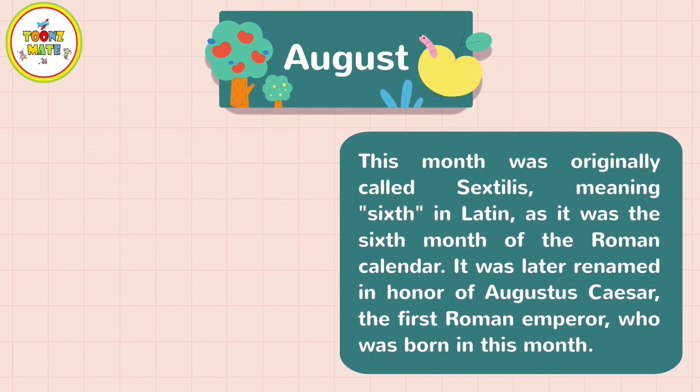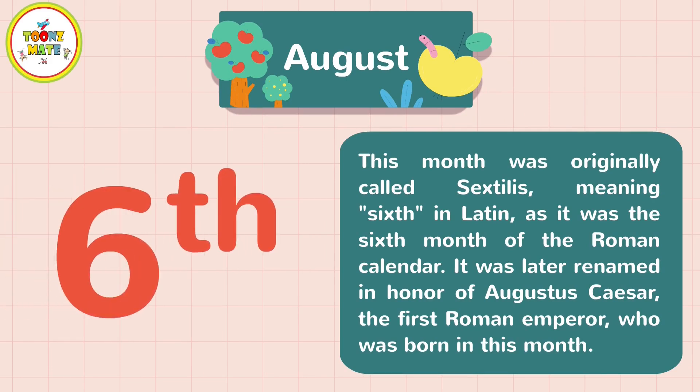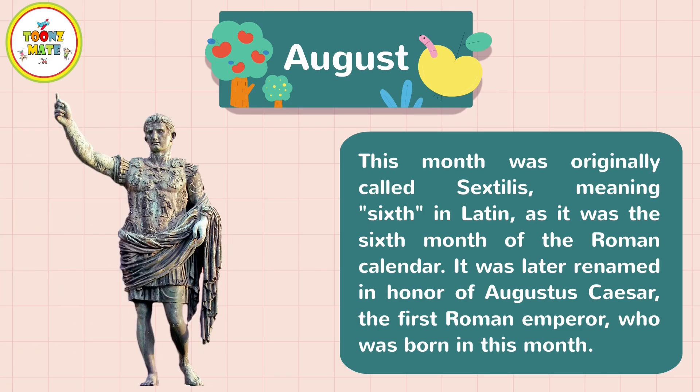August. This month was originally called Sextilus, meaning "sixth" in Latin, as it was the sixth month of the Roman calendar. It was later renamed in honor of Augustus Caesar, the first Roman emperor, who was born in this month.